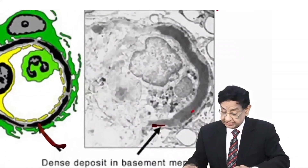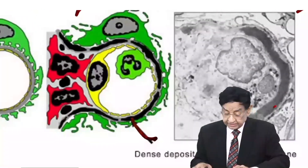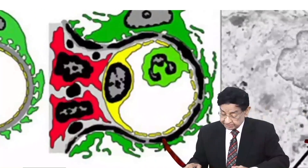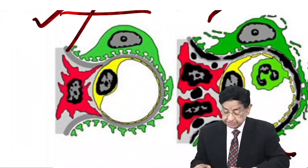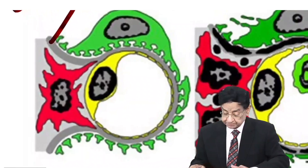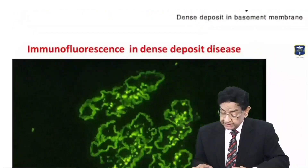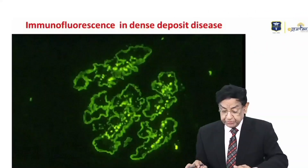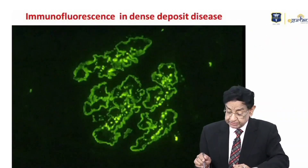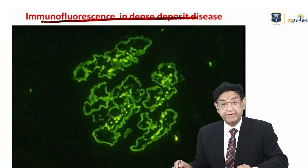You can see an enlarged picture. Now for immunofluorescence — just see this beautiful immunofluorescence picture of dense deposit disease. You can see the deposits in the basement membrane.